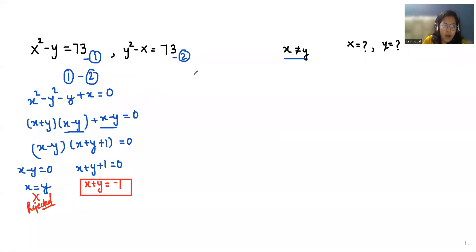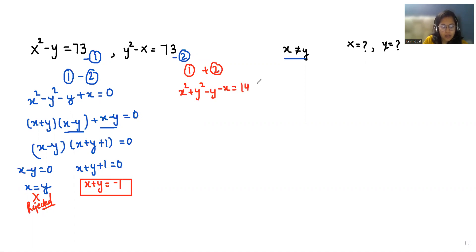Now I'm going to add both equations — first plus second. So x squared plus y squared minus y minus x equals 73 plus 73, that is 146. So x squared plus y squared minus (x minus y) equals 146.